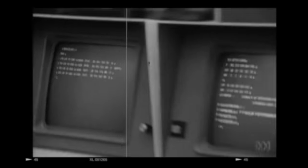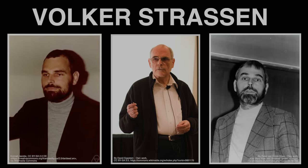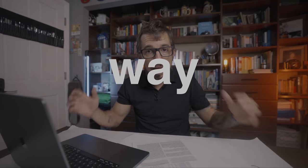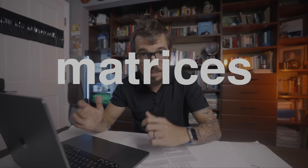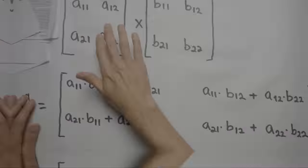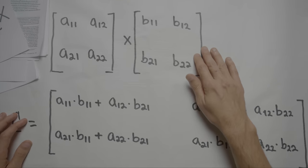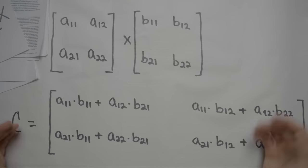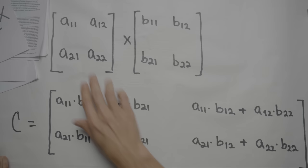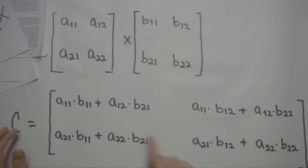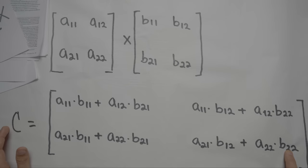In 1969, this guy, Volker Strassen, a German mathematician, showed the world that the way we've been multiplying matrices was not optimal. Up to that point, the best solution to multiply two matrices was the way we teach in school. Let me show you a quick example of how we multiply two matrices. This is matrix A and matrix B, and we want to find matrix C, the result of multiplying A times B. Notice how we compute every value of matrix C.